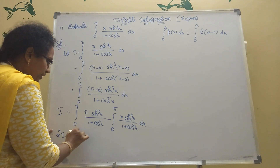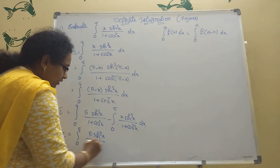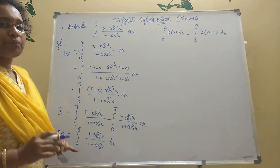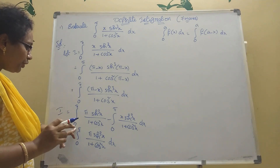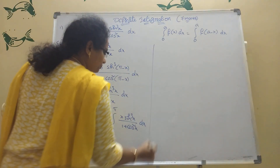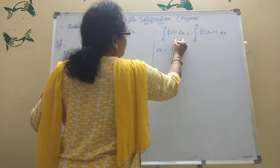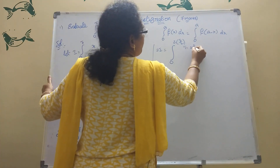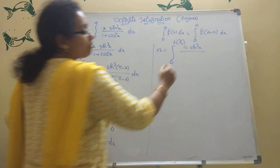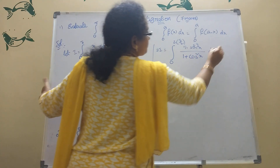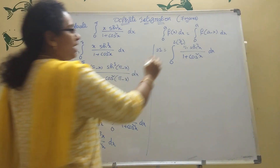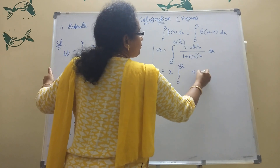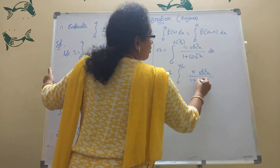2I equals integration of 0 to π of π·sin³x / (1 + cos²x) dx. Now, most formulas use π/2, so we split: 2I = 2 × integration of 0 to π/2 of π·sin³x / (1 + cos²x) dx. The 2 cancels, giving I = π × integration of 0 to π/2 of sin³x / (1 + cos²x) dx.